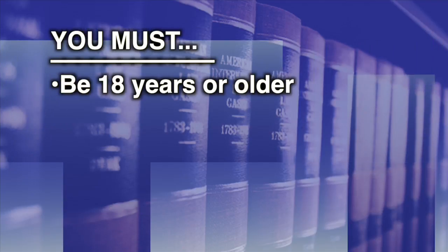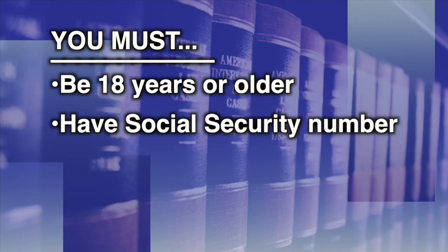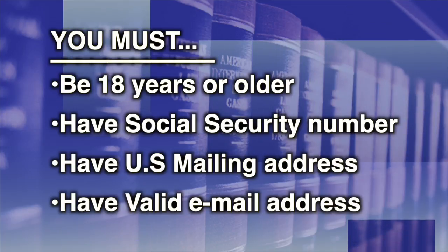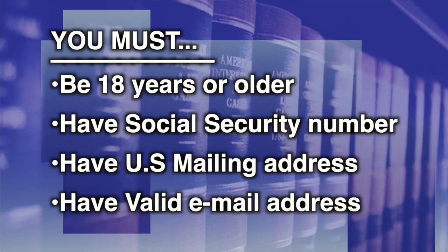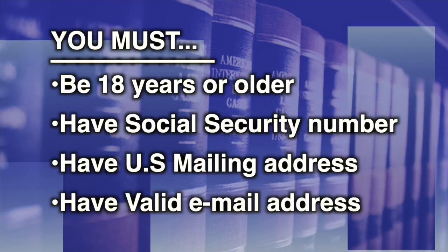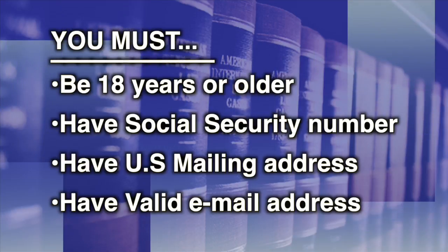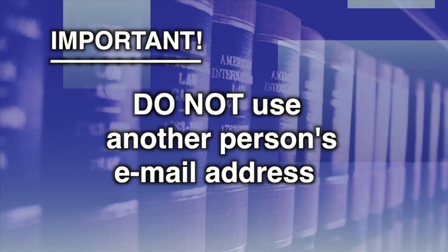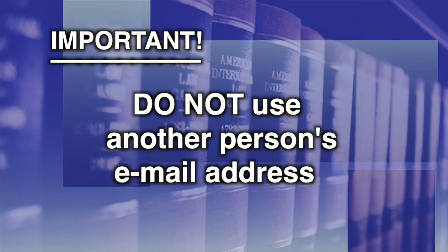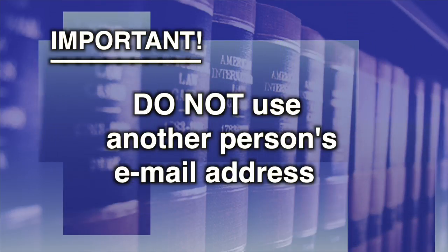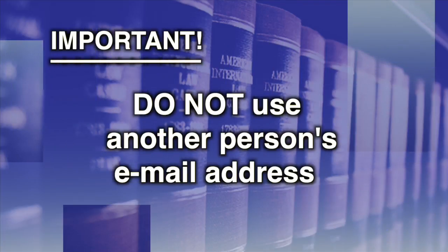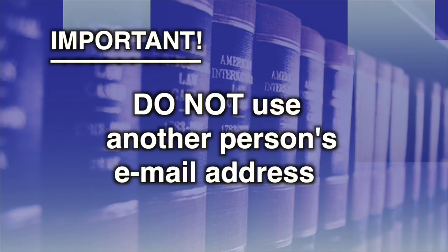You must be 18 years of age or older, have a valid Social Security number, and have a U.S. mailing address. You must also provide an email address. If you don't have an email account, you can set one up with a provider such as Google, Yahoo, or AOL. It is important that you have your own email address and have access to this email account. Do not use someone else's email address to set up a Social Security account.